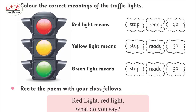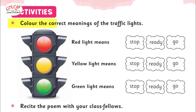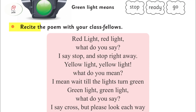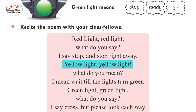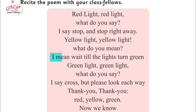Activities: Color the correct meaning of the traffic lights. Red light means stop, yellow light means ready, green light means go. Now recite the poem with your class fellows. Red light, red light, what do you say? I say stop and stop right away. Yellow light, yellow light, what do you mean? I mean wait till the lights turn green.